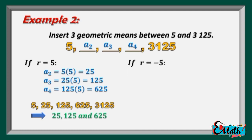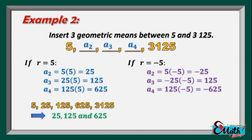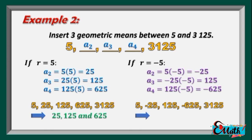But if our r equals negative 5, then a sub 2 equals 5 times negative 5 equals negative 25, and a sub 3 equals negative 25 times negative 5 equals 125. Thus, the sequence we formed is 5, negative 25, 125, negative 625, and 3,125. And its geometric means are negative 25, 125, and negative 625.